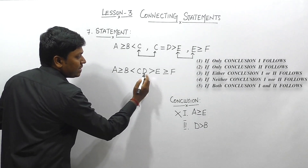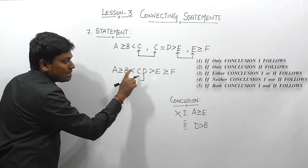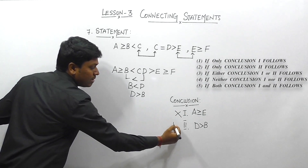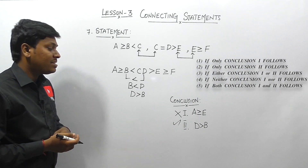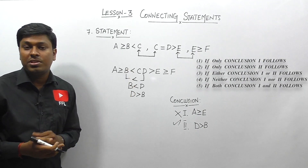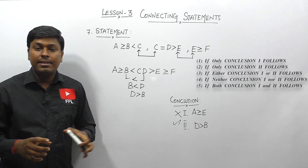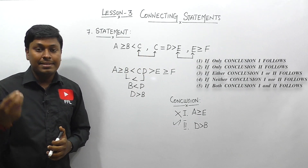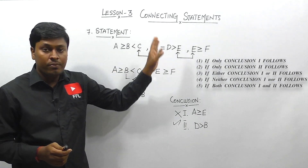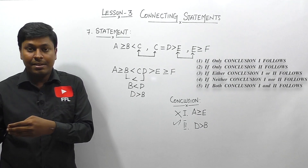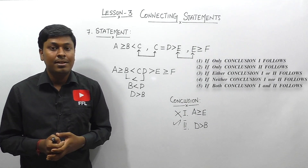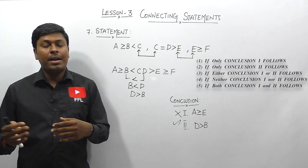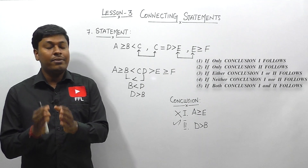Conclusion 1: A ≥ E. Between A and E there are three symbols including one < and one >, which are dissimilar — relationship cannot be established, so conclusion 1 is false. Conclusion 2: D > B. Between D and B there is one symbol: <, giving B < D or D > B. Conclusion 2 states D > B — true. Answer: only conclusion 2 is true. This completes lesson 3 on connecting statements, where we learned to join multiple statements into one using common elements, then evaluate conclusions. Lesson 4 will cover cases where statements cannot be directly connected and a new equation must be formed.